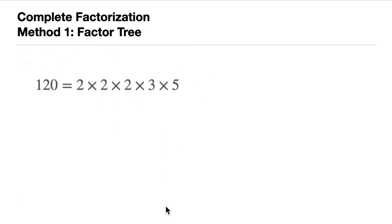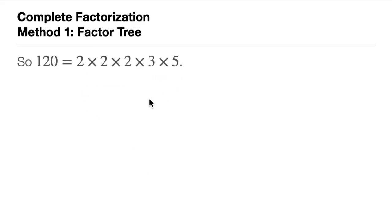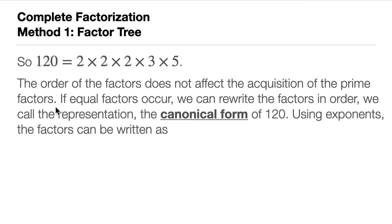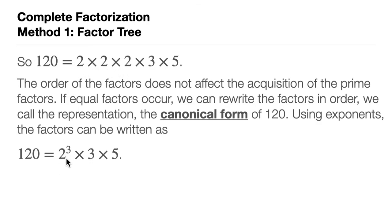Since 120 equals 2 times 2 times 2 times 3 times 5, by commutativity the order of factors does not affect the factorization. If equal factors occur, we can rewrite them using exponents in what we call canonical form — the most proper way of writing out the prime factorization. So using exponents, 120 equals 2 cubed times 3 times 5. This is the prime factorization of 120 in canonical form.